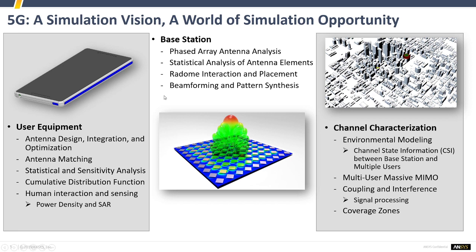Because of millimeter wave, path loss decreases rapidly as frequency increases. To overcome the huge path loss, there are two technologies: massive MIMO with multiple antennas, and hybrid beamforming. Hybrid beamforming combines hardware phase shifters with software digital beamforming algorithms, making the antenna beam sharper and directing it toward the best direction to send data to the target device.